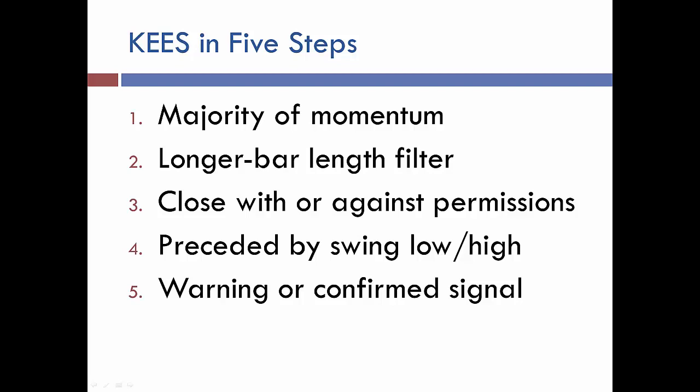If the majority of momentum indicators are permissioned long, then you'll get a long permission on the bar. If the majority are short, you'll get a short permission on the bar. From that point, KEYS looks at a longer bar length filter. In the background, KEYS is building a synthetic time frame to see whether or not that longer bar length is permissioned in the same direction or in the opposite direction of the majority of the momentum indicators.